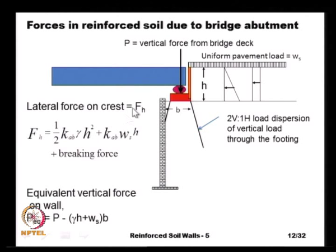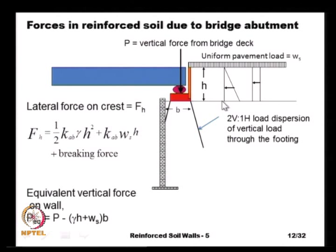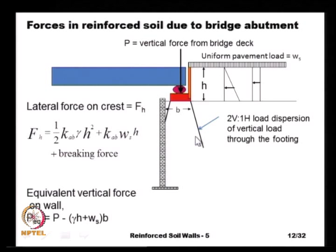A typical bridge abutment has a reinforced soil retaining wall with a bridge abutment sitting directly on top of the reinforced fill. The bridge deck transfers some load directly into the reinforced fill through bearings. The height of the bridge structure is a small h, and there could be pavement load applied on the road surface due to either self weight of the pavement structure or live loads from vehicles. The lateral thrust on this structure is estimated as (1/2)·K_ab·gamma·h² due to soil self weight, plus K_ab·W_s·h due to surface loads, plus braking and impact forces.